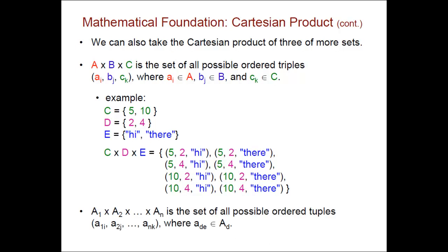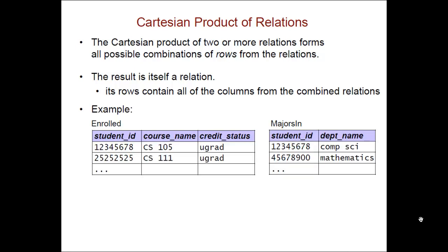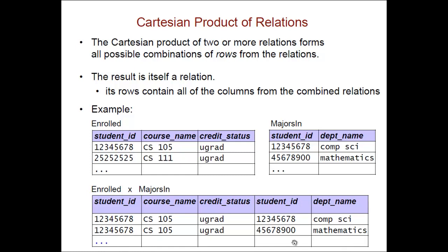In the relational model, we can take the Cartesian product of two or more relations, and that forms all possible combinations of the rows from those relations. For example, if I have the relation enrolled and the relation majors_in, then the Cartesian product of those two will start with all of the columns from enrolled and then add on the columns from majors_in. It's worth noting that sometimes when you combine columns like this, you end up with two columns that have the same name — in this case, both enrolled and majors_in have a column called student ID — and in that case we have to prepend the table name and use a dot between the table and column names in order to distinguish between them.